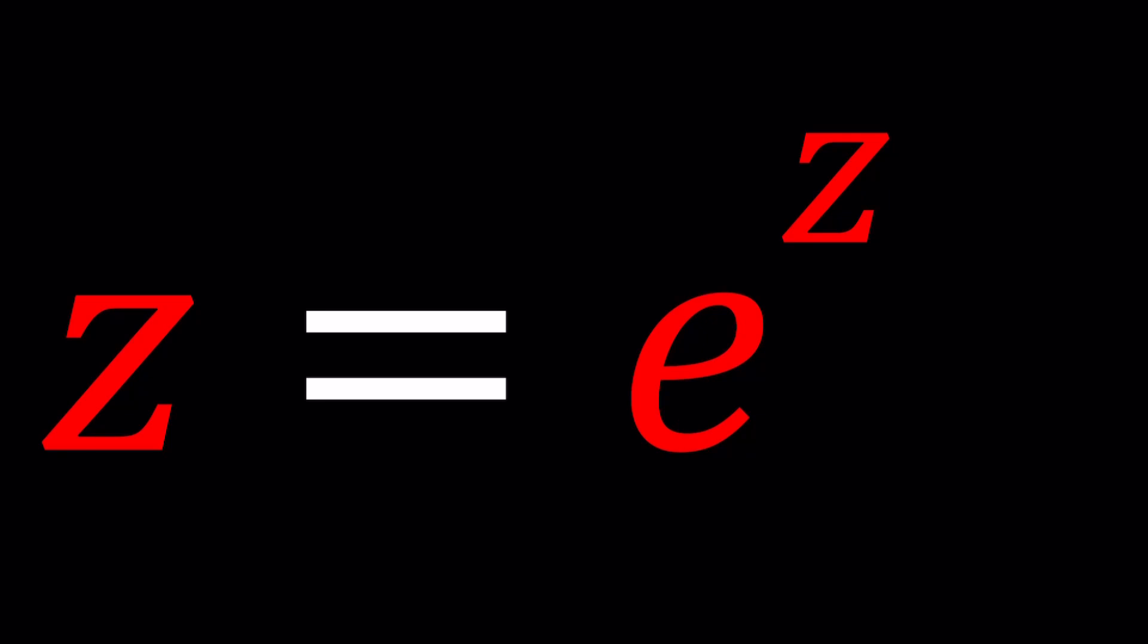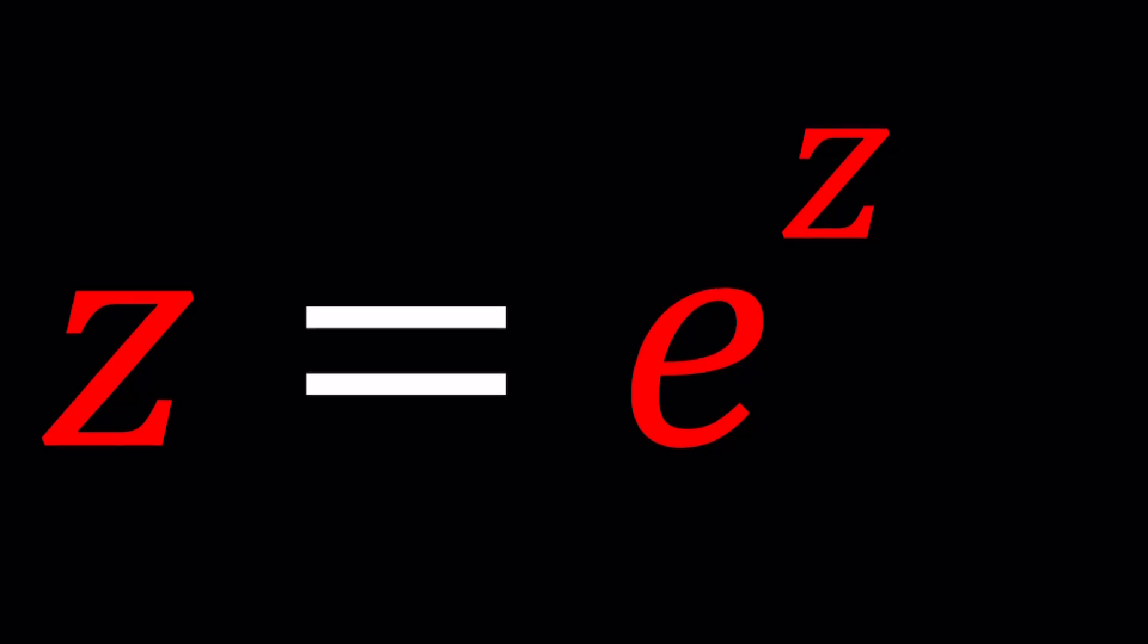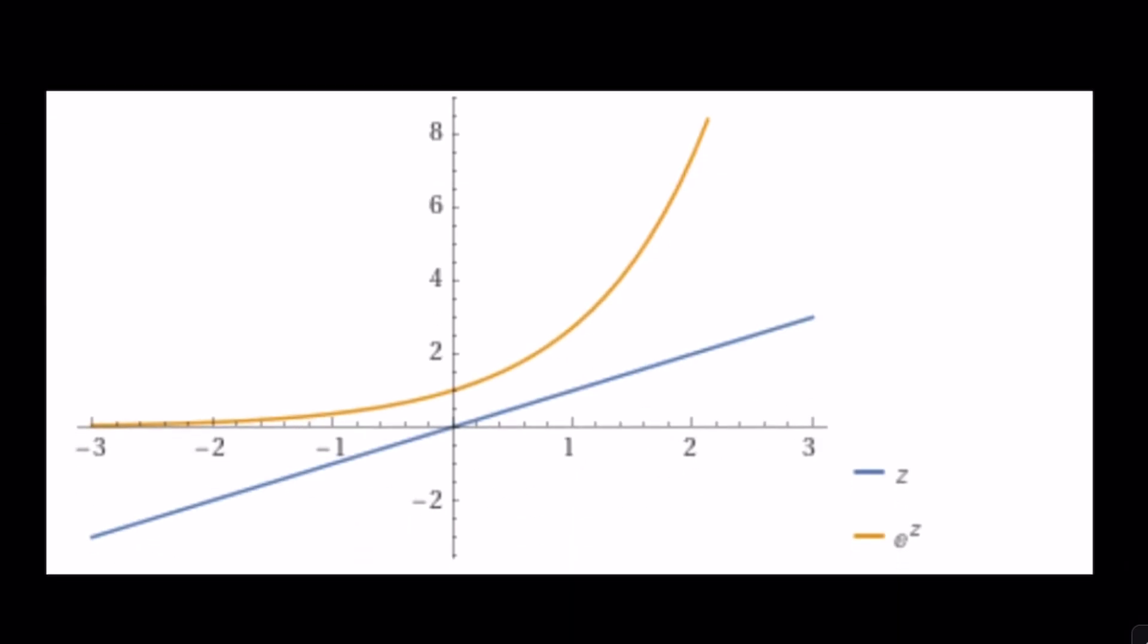Z equals e to the power z, where e is Euler's number, or you can call that the exponentiation, complex exponentiation. Now let's take a look at the graph of these two functions first. Uh-oh, they do not intersect. What is that supposed to mean? That means there are no real solutions. Wait a minute, isn't this channel all about complex numbers? Yes, it is.